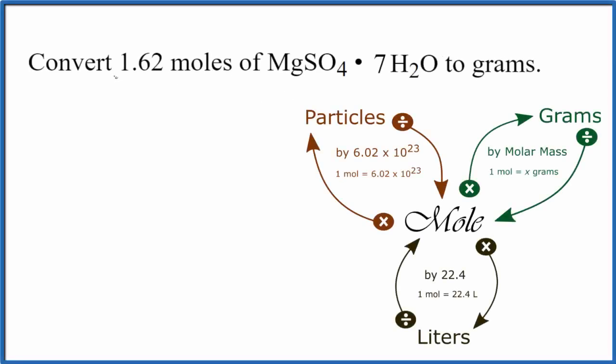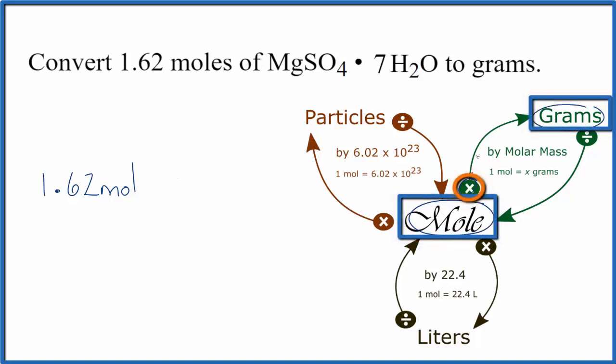In this video we'll convert 1.62 moles of magnesium sulfate heptahydrate to grams. This number 1.62 I just made up for the video. So we have 1.62 moles and we go from moles to grams by multiplying by the molar mass.